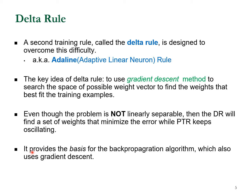The delta rule provides the basis for the much more important backpropagation algorithm, which we'll study later. Backpropagation also uses the gradient descent method. The gradient descent method is very important in machine learning techniques, and we'll cover the basic concept of gradient descent in this chapter.